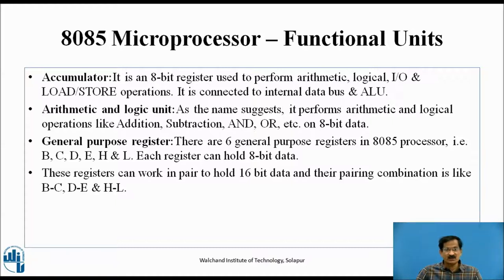General Purpose Registers: There are 6 general purpose registers in the 8085 processor — B, C, D, E, H, and L. Each register can hold 8-bit data. These registers can work in pairs to hold 16-bit data, with pairing combinations of BC, DE, and HL.